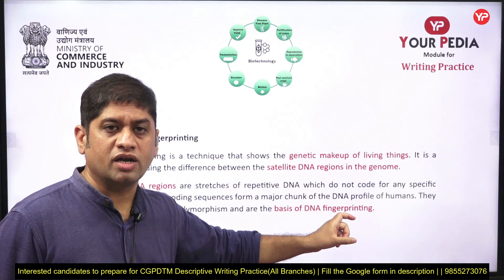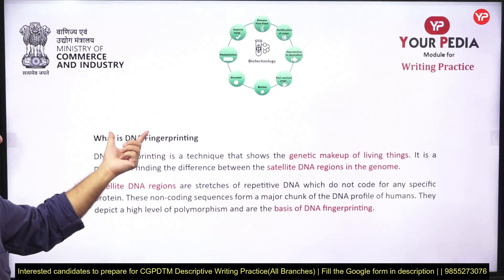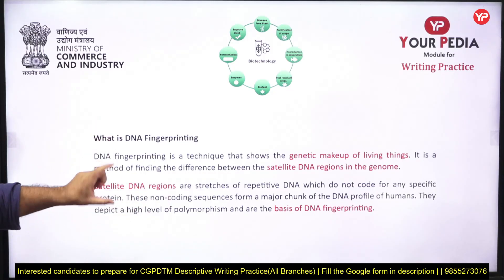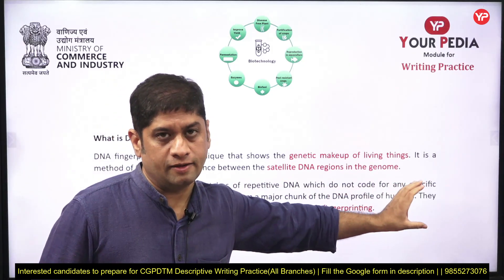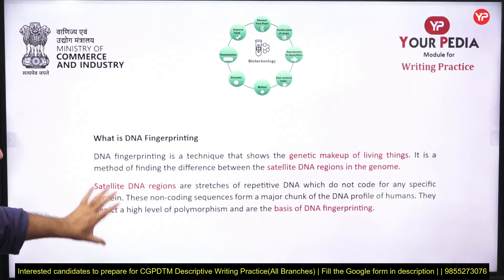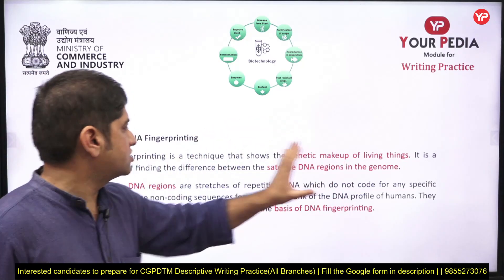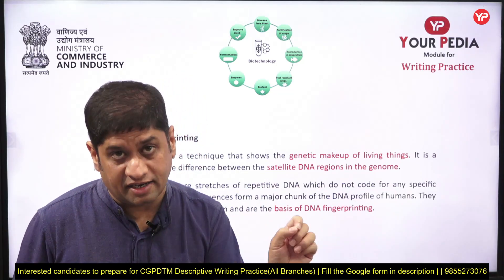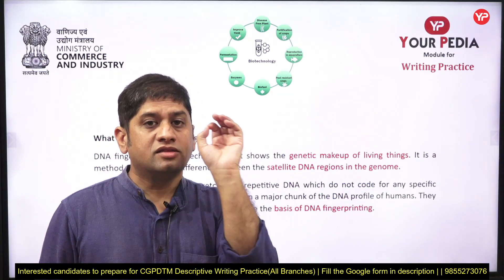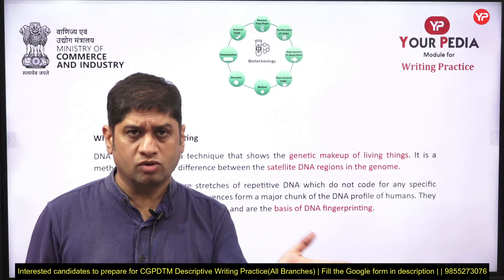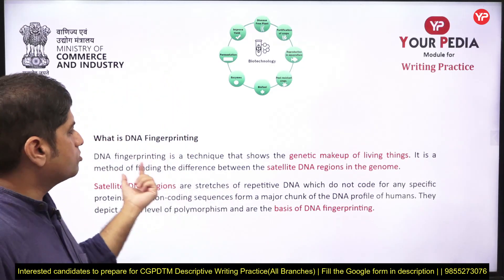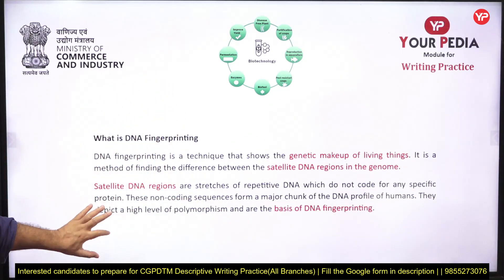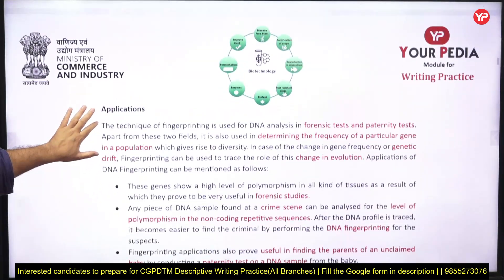Start with the explanation of DNA fingerprinting. When you explain it, if you feel like the theme is changing from one line to the next, you can use a new paragraph accordingly. Write something like 'DNA fingerprinting shows the genetic makeup of living things' — written in red, meaning you are supposed to underline it. The moment you underline it, the paper checker will focus on that.